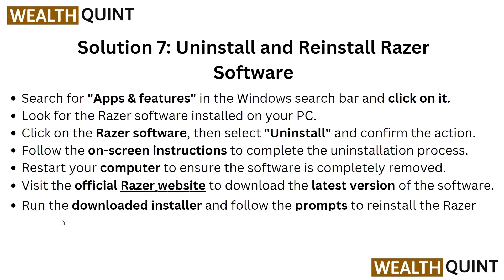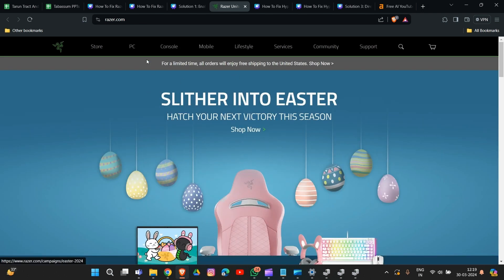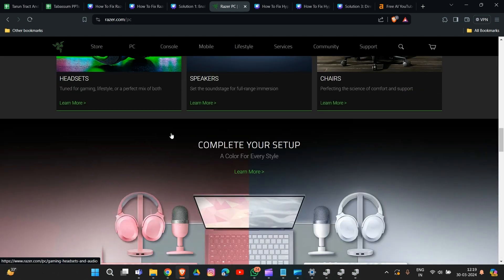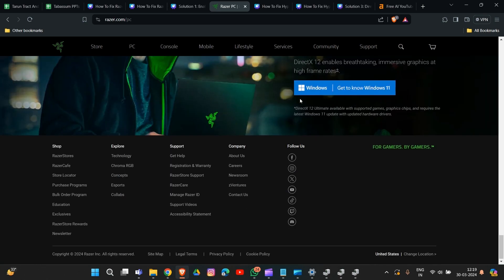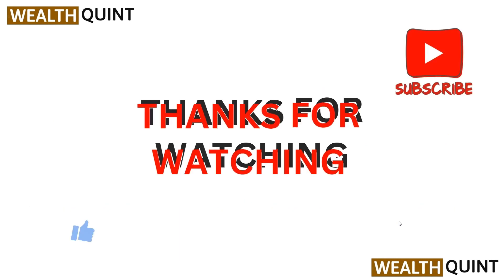Solution seven: uninstall and reinstall the Razer software. Search for Apps and Features in the Windows search bar and click on it. Look for the Razer software installed on your PC, right-click on it, select Uninstall, and confirm. Follow the instructions to complete the uninstallation and restart your computer to ensure the software is completely removed. Then go to the Razer website to download the latest version of the Razer headset software and run the downloaded installer to reinstall.